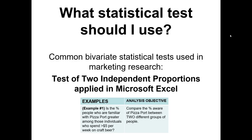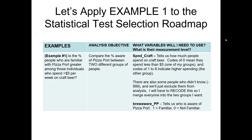In this video we're going to illustrate the application of the test of two independent proportions applied in Microsoft Excel. The scenario we're dealing with is comparing whether people who have a lower or higher level of spending on craft beer — specifically those who spend less than five dollars per week or greater than five dollars per week — differ in their familiarity or awareness level of Pizza Port, a craft brewery.